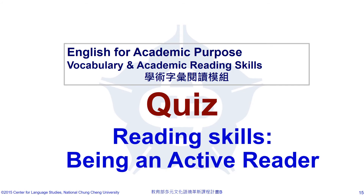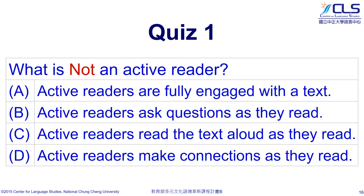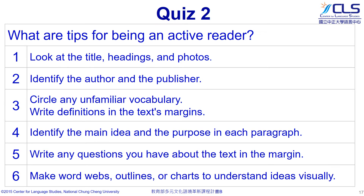Let's go with a more challenging task — a quiz. Which of the following is not seen in an active reader? The answer is C: they don't often read aloud the text. Now let's try to find the tips for being an active reader. Almost every tip is important for active readers except number 2.